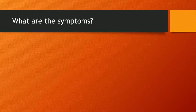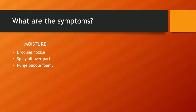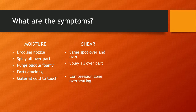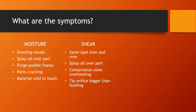So what are the symptoms? First, you have moisture, which presents as a drooling nozzle, splay all over the part, a purge puddle that appears foamy, parts that might be cracking, and material too cold to touch. Under shear, symptoms might be splay occurring in the same spot over and over, or splay all over the part if the temperature is too high. You can see signs of the compression zone overheating. Also check the tip orifice — make sure it's not bigger than the bushing.